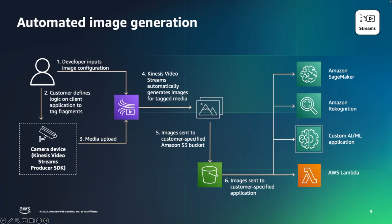Amazon Kinesis Video Streams automated image generation allows you to configure several things to control the output of generated images. It allows you to select the frequency at which images are generated. It also allows you to configure the type of image — either JPEG or PNG — and whether or not to downscale the image through width and height resolution settings as the image is extracted from your video data.